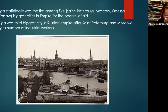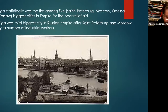Statistically, Riga was first among five cities — Saint Petersburg, Moscow, Odessa, and Warsaw — for poor relief aid. Riga was the third biggest city in the Russian Empire after Saint Petersburg and Moscow by its number of industrial workers. Riga became a bridge for both West and East novelties in technology, culture, and ideas in social care.